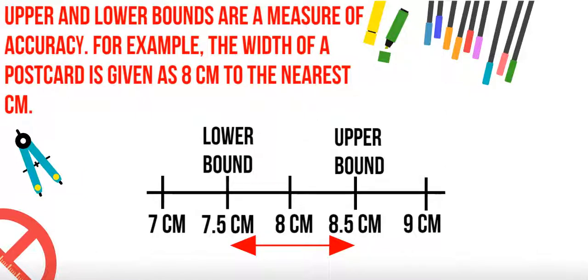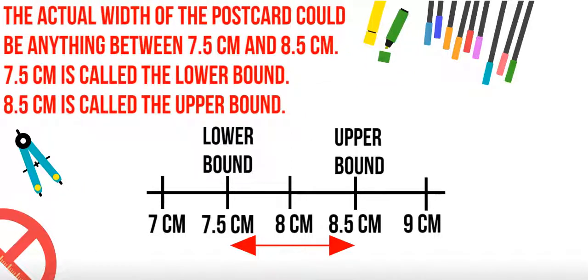For example, the width of a postcard is given as 8 cm to the nearest cm. The actual width of the postcard could be anything between 7.5 cm and 8.5 cm.